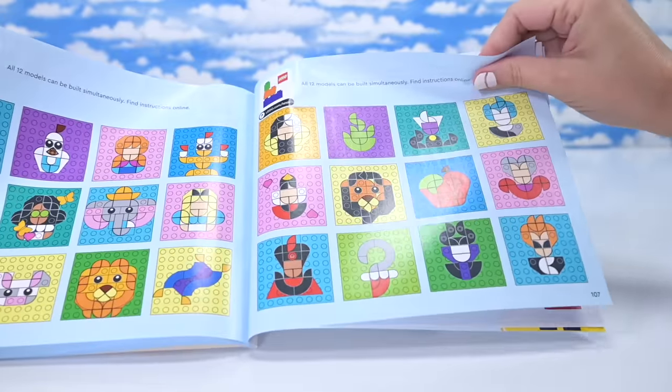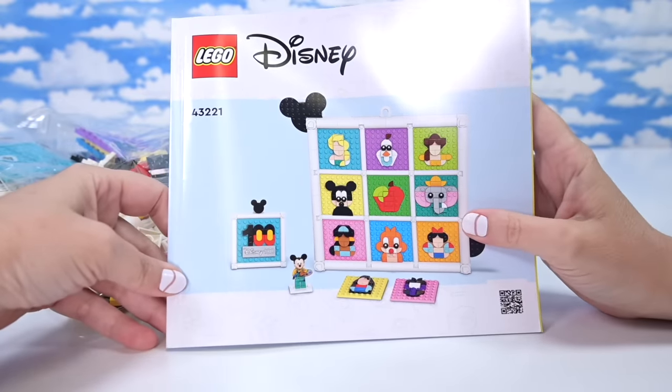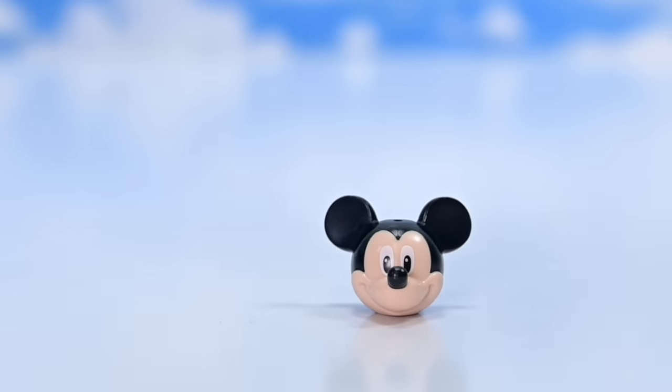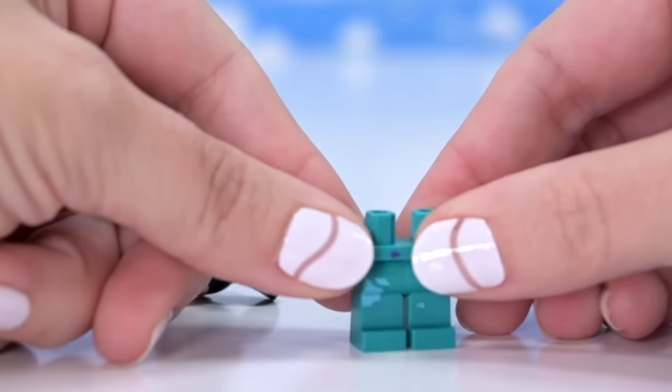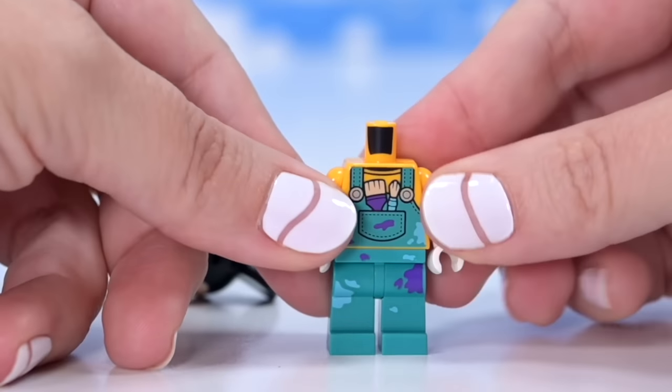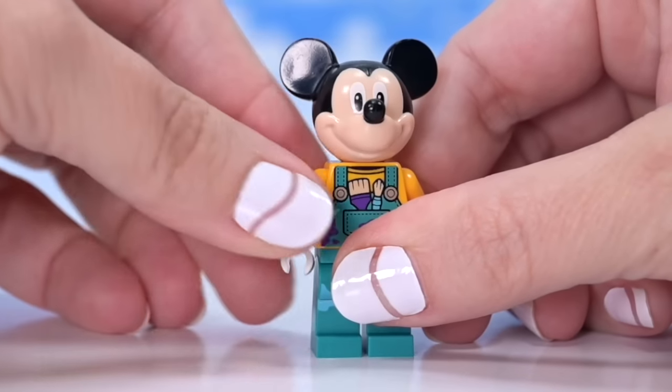There's a villains one too. All of those instructions are going to be available online, which they're not just yet because the set hasn't officially been released. The set comes with an exclusive Mickey. It's really cute that it's essentially a dot set, a portrait building set, but also has a minifigure.